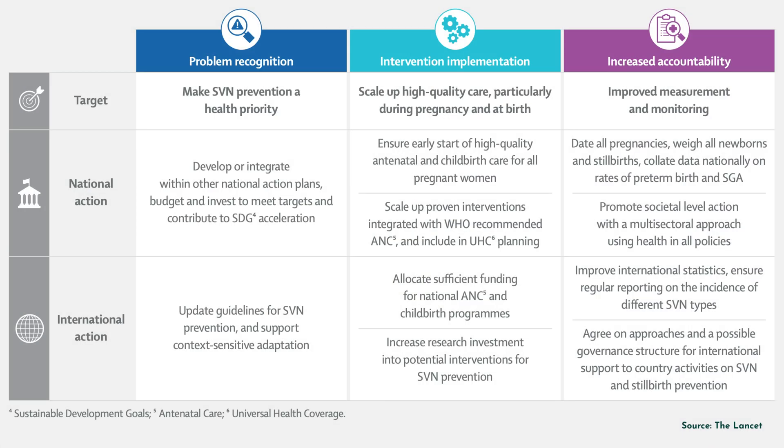The final commentary makes a call for action based on three pillars. The first pillar is that we need to make small and vulnerable newborn prevention a priority — it's been neglected for a while and we need to revisit that. The second pillar is that we need to get these proven interventions scaled up and used globally and incorporated into existing WHO guidelines. The third pillar is around improving our measurement and accountability.